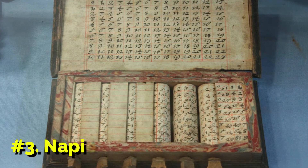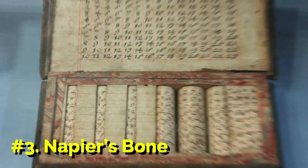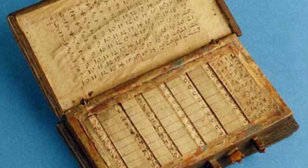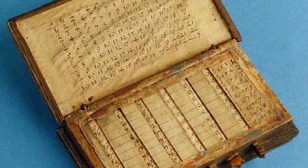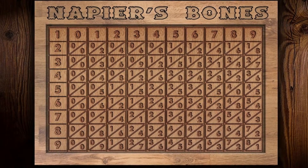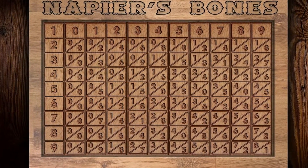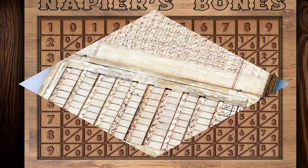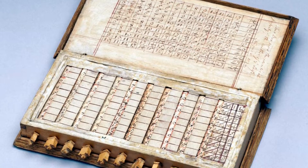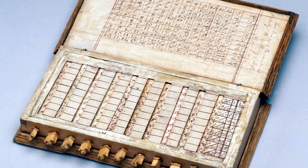Number 3: Napier's Bone. John Napier of Murchiston, a Scottish mathematician (1550–1617), invented Napier's Bone in 1614. He was also involved in the creation of logarithms. Napier's Bone was a manually operated calculating device that allowed the operator to multiply, divide, and calculate square and cube roots by moving rods around and placing them in specially designed boards.